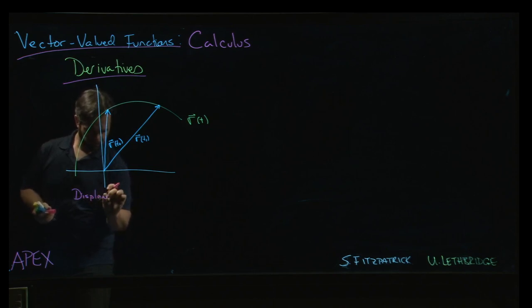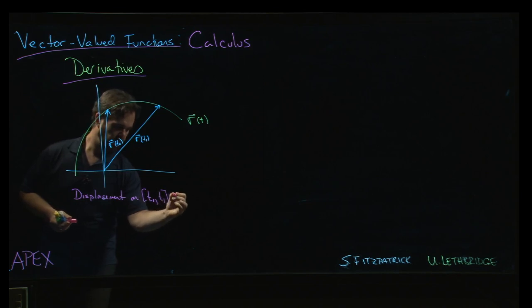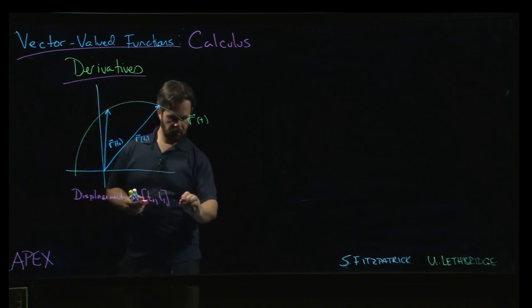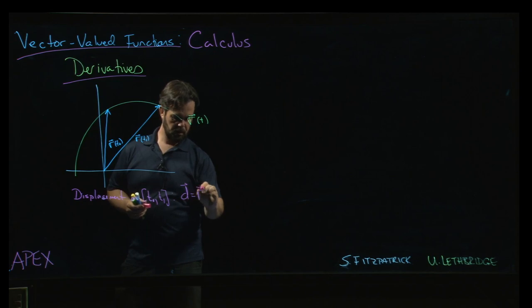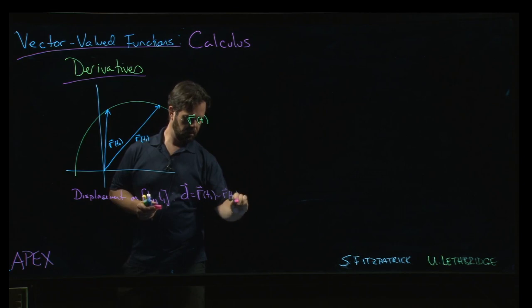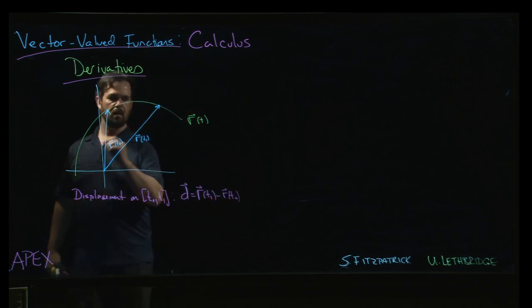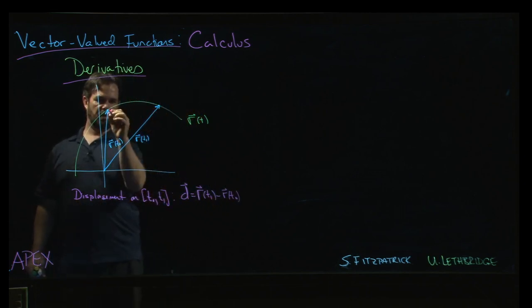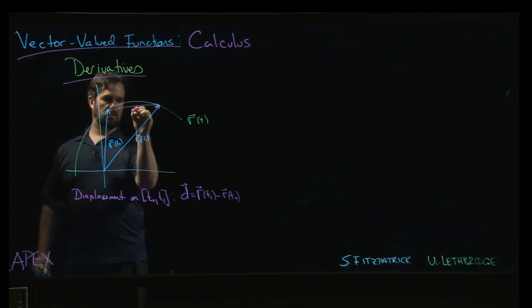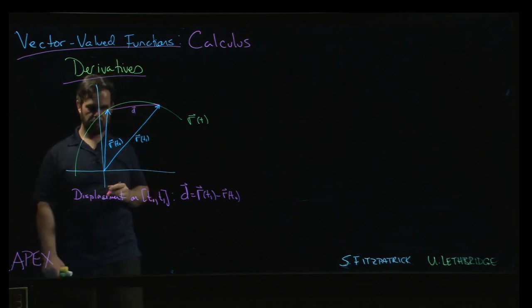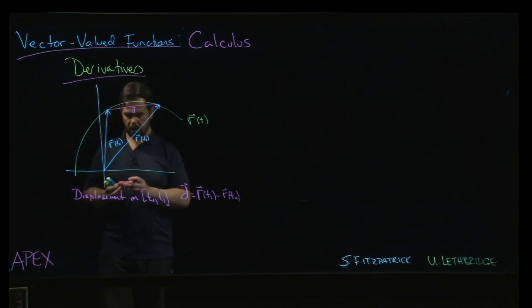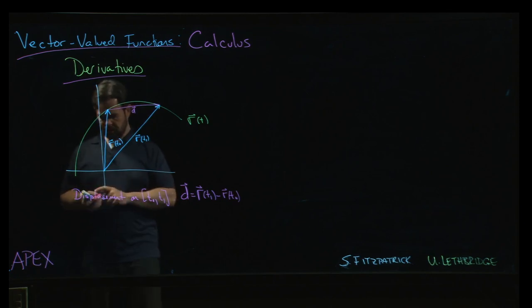Okay, so we know that the displacement from t0 to t1 is just d, which is a vector quantity, right, a constant vector quantity, and it's just the difference. So we can draw that difference through that tip to tip rule for difference. Right, here's that displacement d.